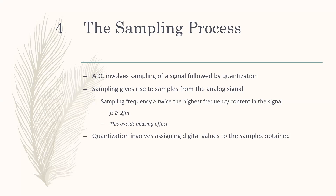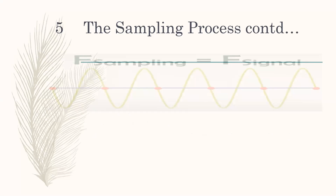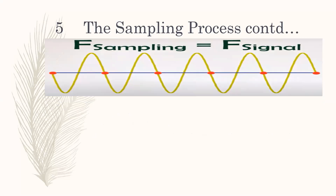Quantization involves assigning zeros and ones to the samples obtained, based on some conditions. The quantizer may be a uniform quantizer or a non-uniform quantizer, and depending on what type of quantizer you are using, the number of bits utilized will vary.